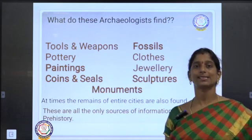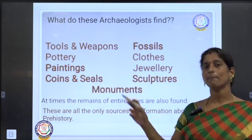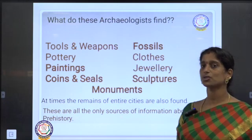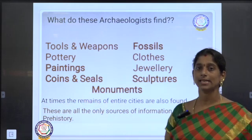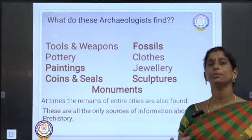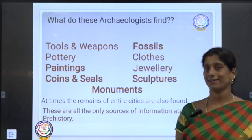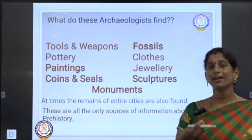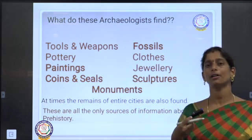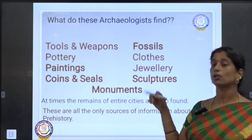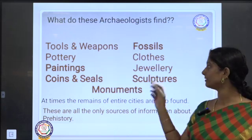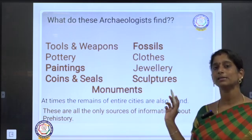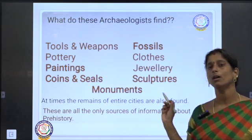Then there are paintings — the prehistoric man's paintings we saw yesterday. Coins and seals — the coins used as a medium of trade are all available. Fossils — the remains of animals or human beings. The jewellery they used and sculptures — statues found in temples or old buildings that we still see today.